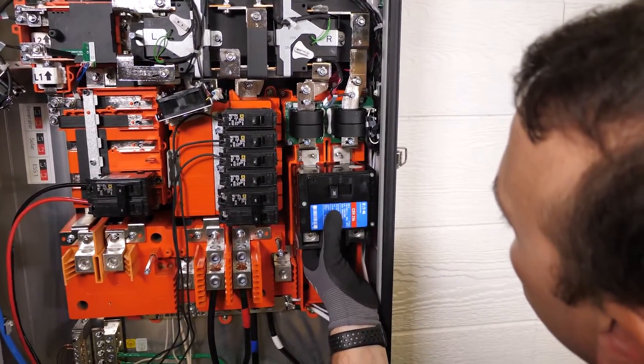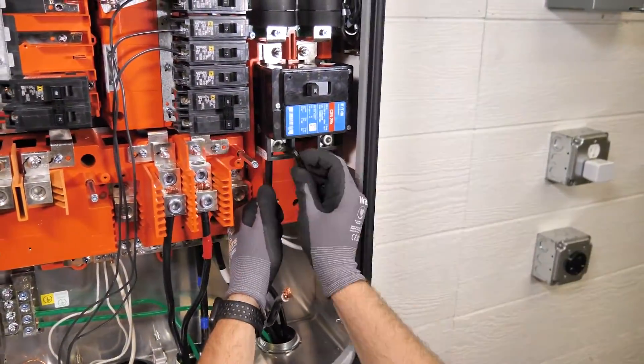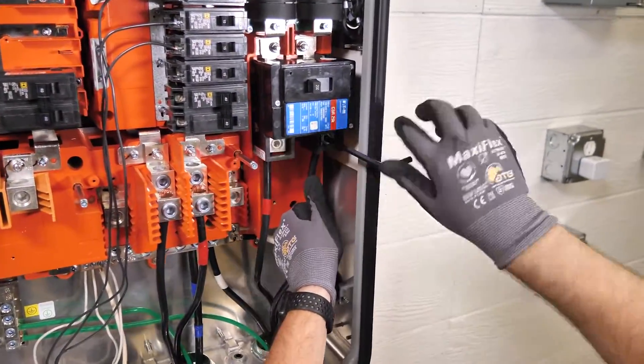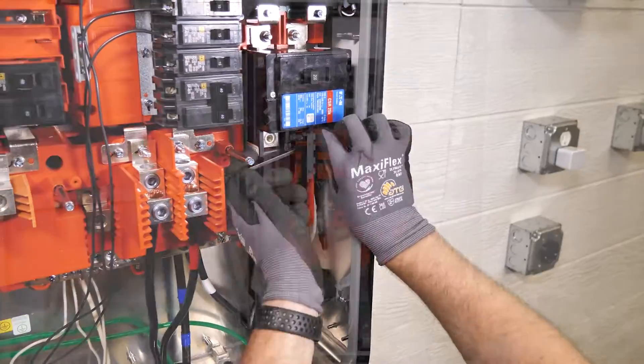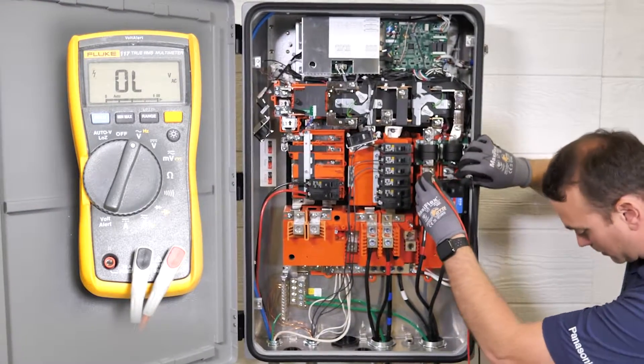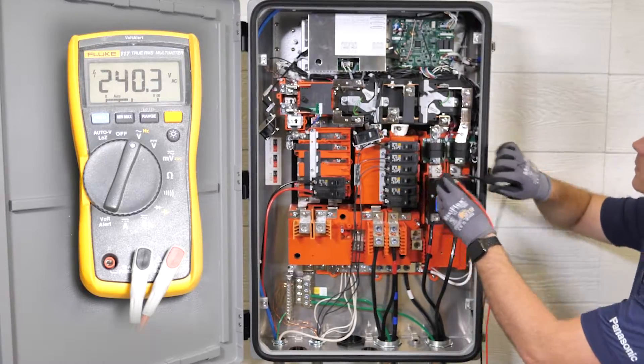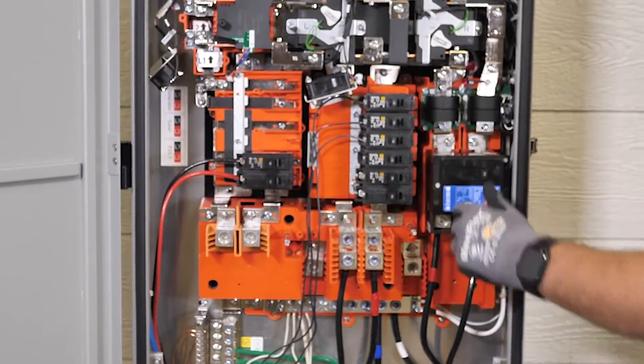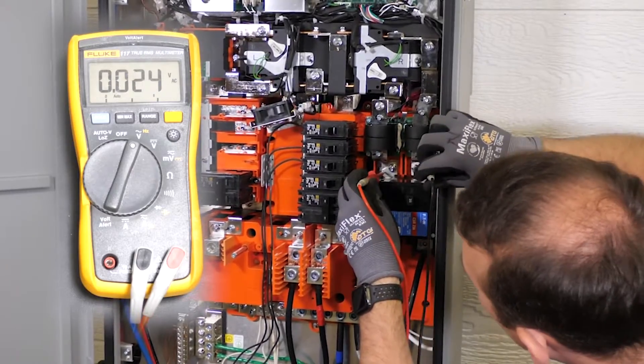Since this is a service entrance installation, we have installed a 200 amp main breaker on the grid input. Ensure that you have 240 volts on the grid input. Turn on your grid breaker. Check voltage on the grid breaker.